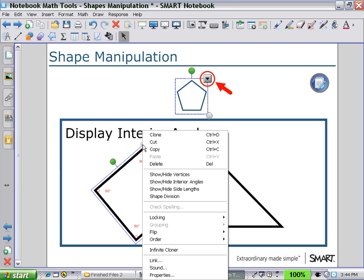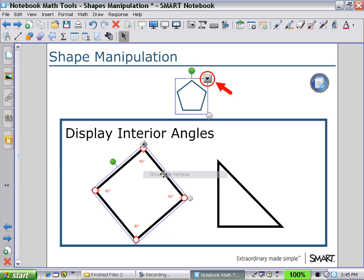Selecting the arrow pull down menu, we can show and hide the vertices again. Select one vertex and drag, and as you drag the vertex around, you can see that the angles recalculate.